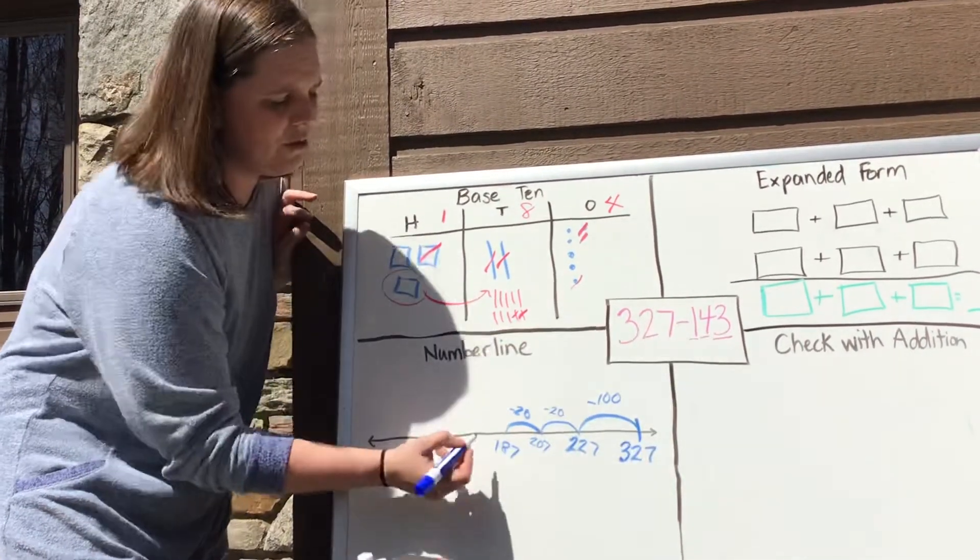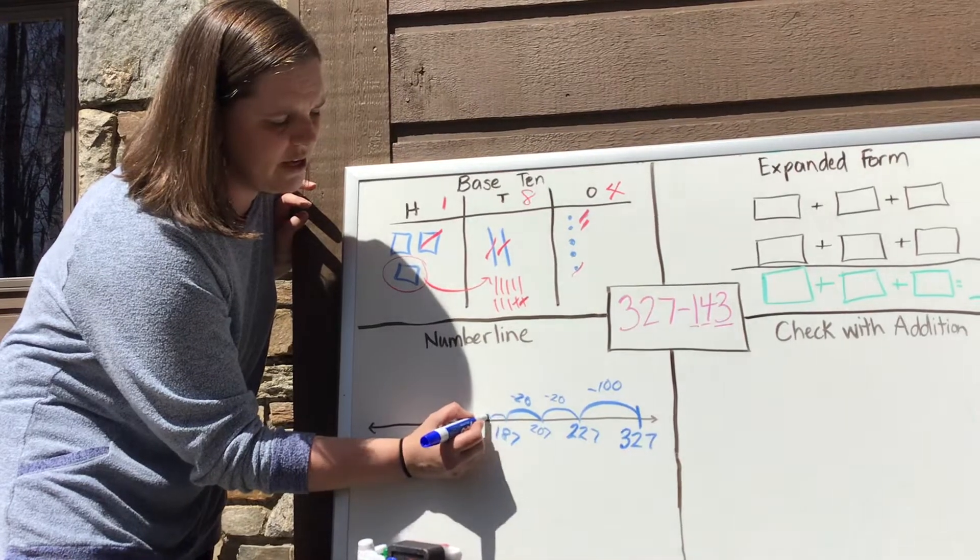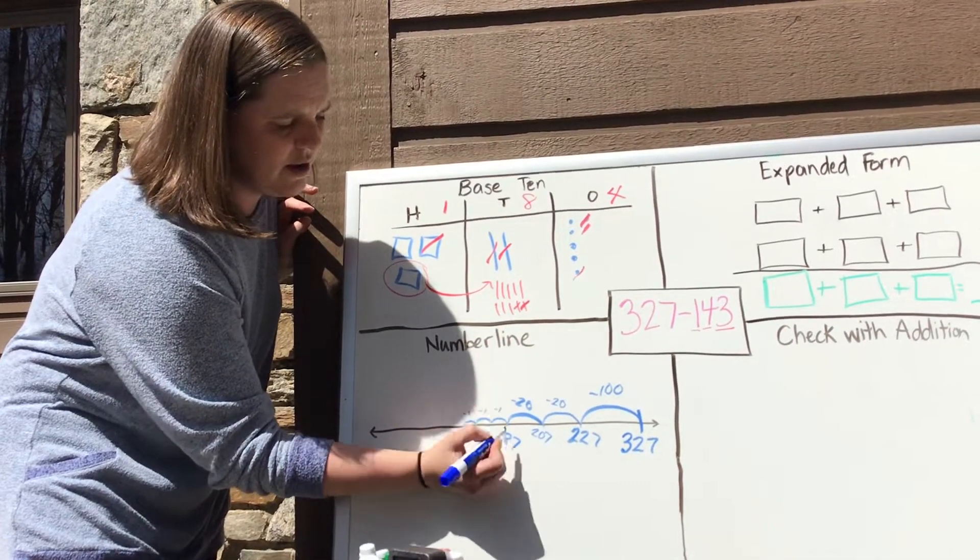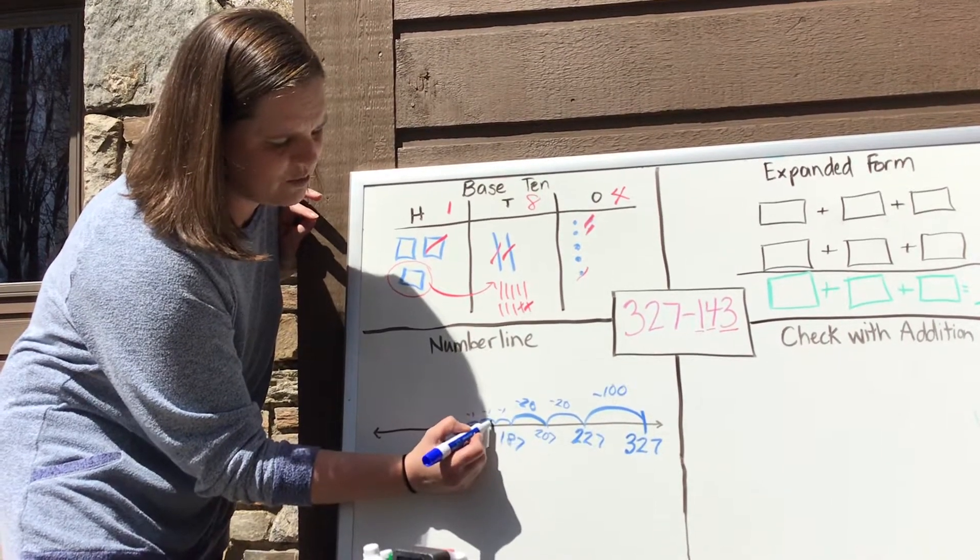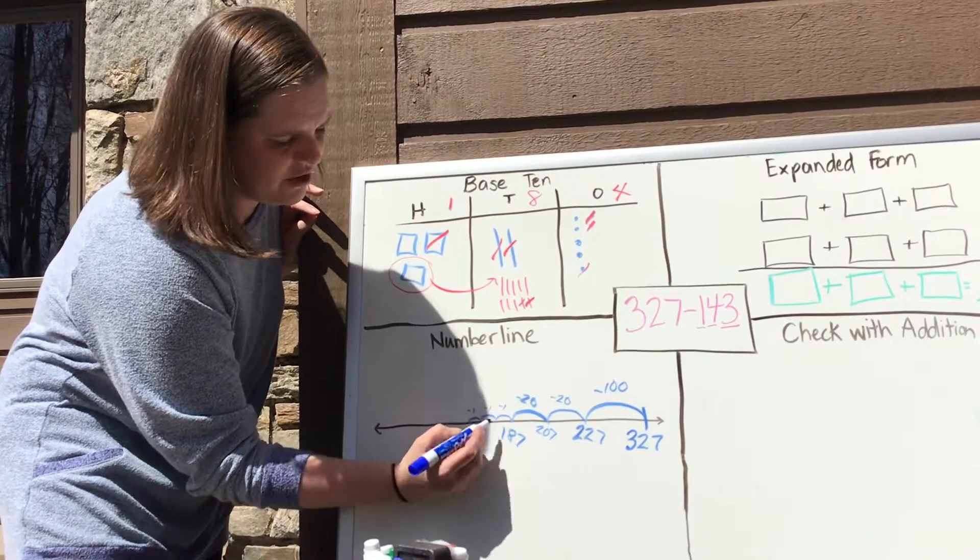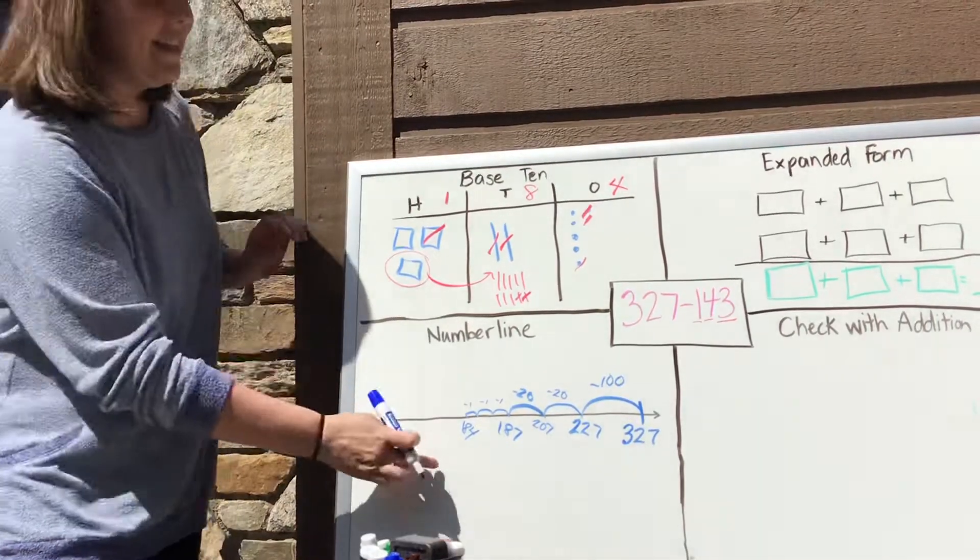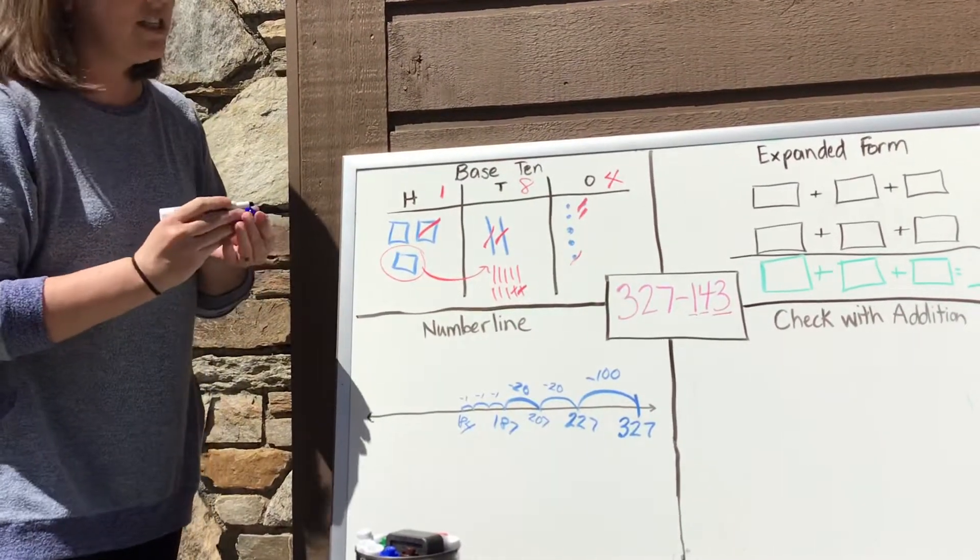Now I need to take away my three ones. So I'm going to go one, two, three. And when I do that, I'm going to get 186, 185, 184. So I got the same answer. So I must be doing something right.